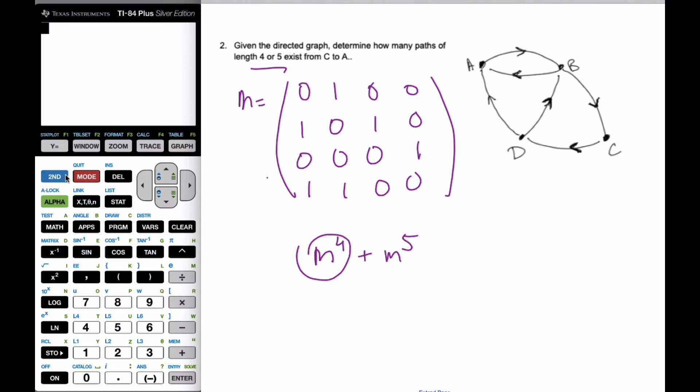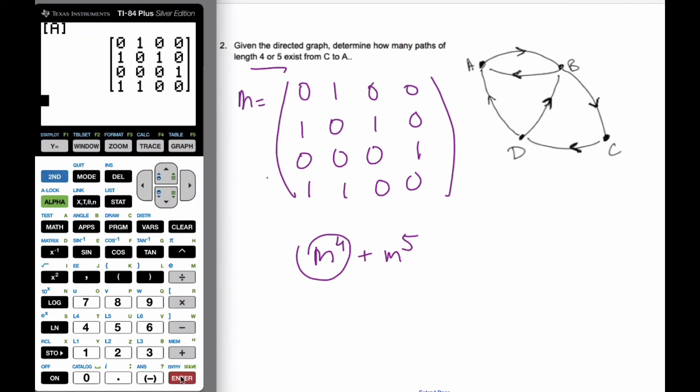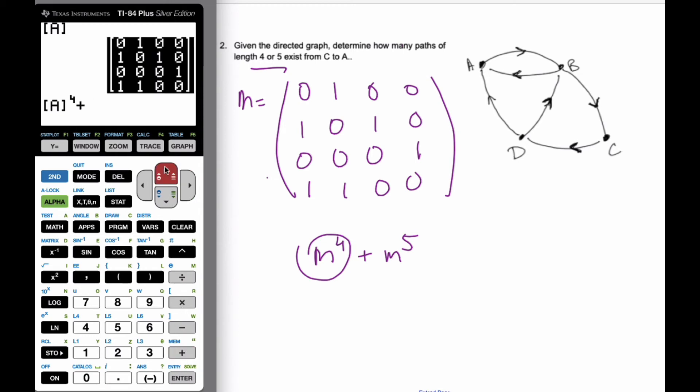So if I go to my calculator, I've already taken the liberty to throw it into my matrix. A is already set to be M here. So I want this to the power 4, plus A again to the power of 5.